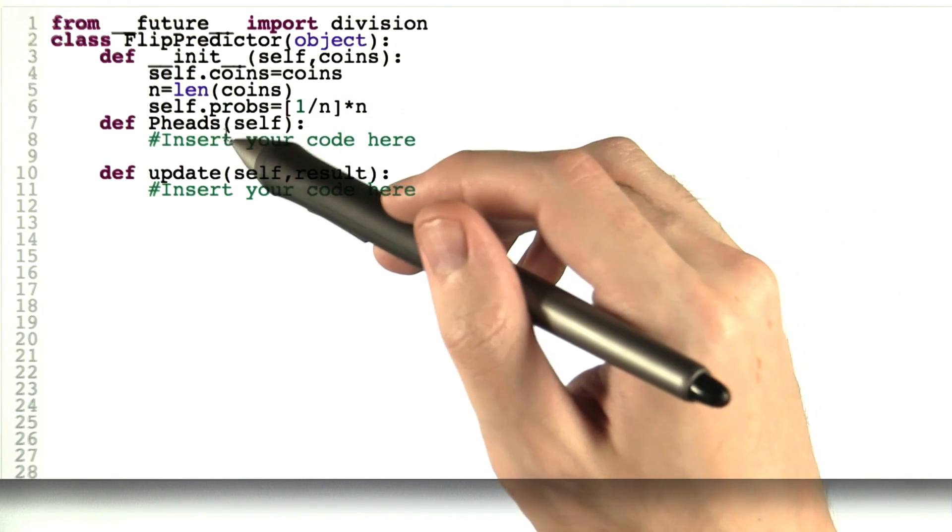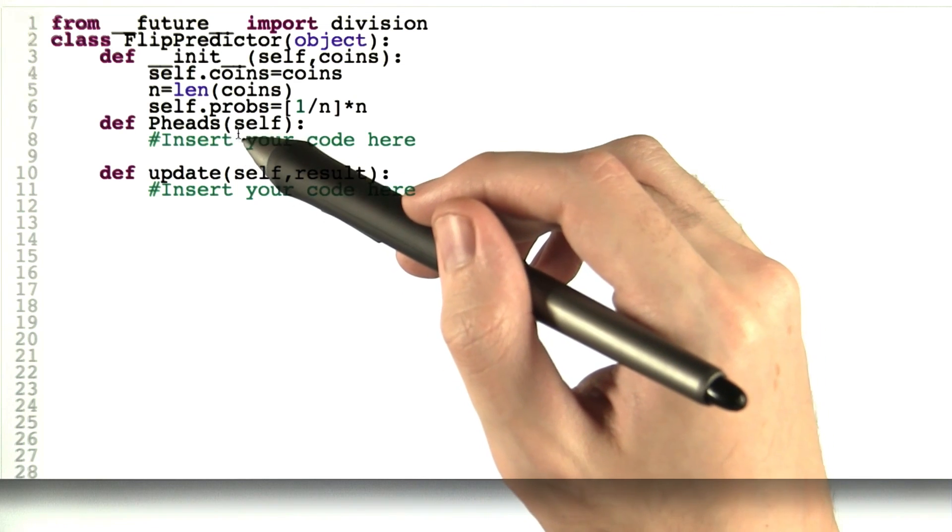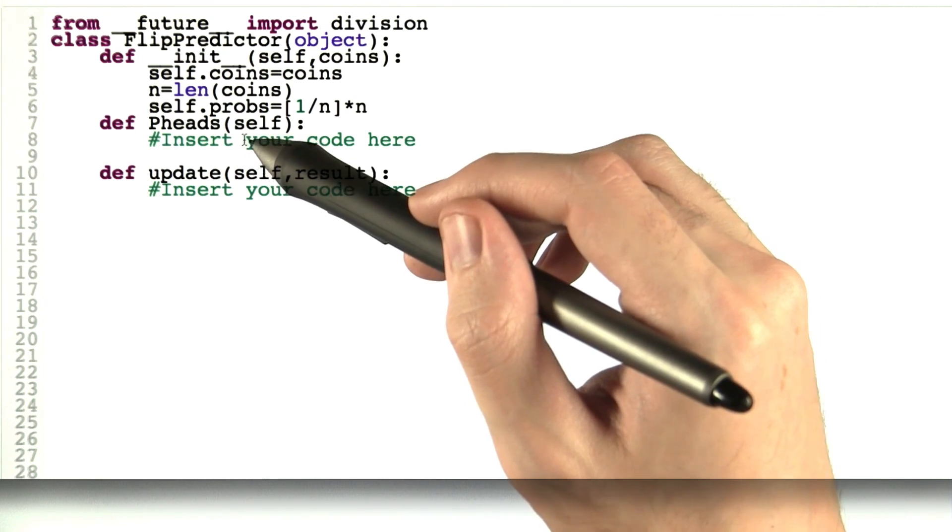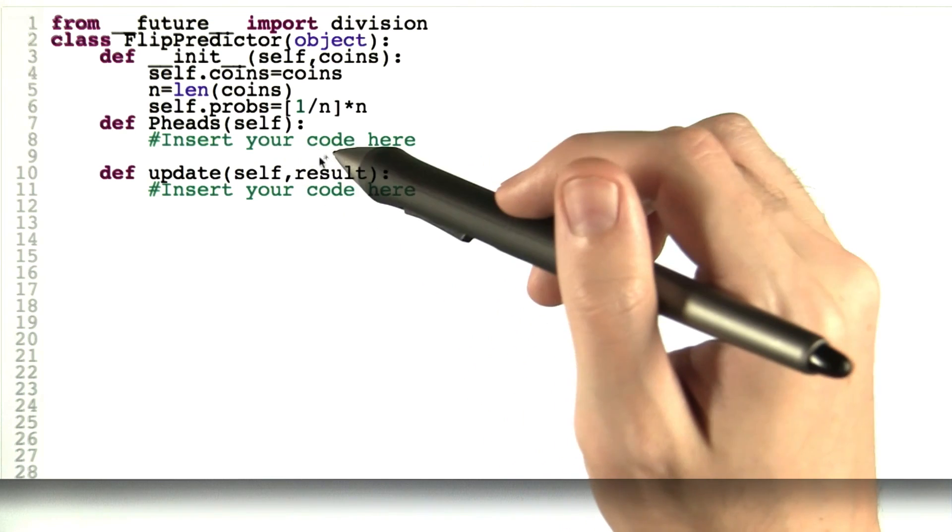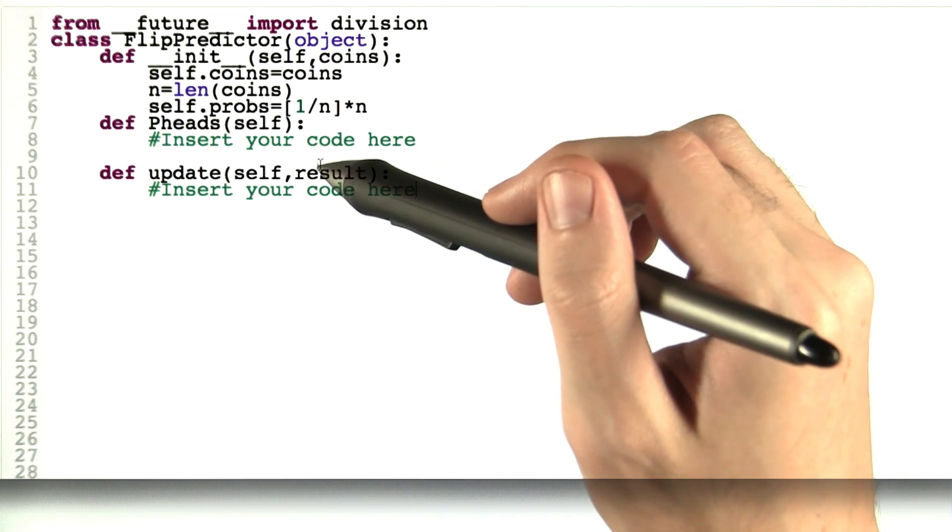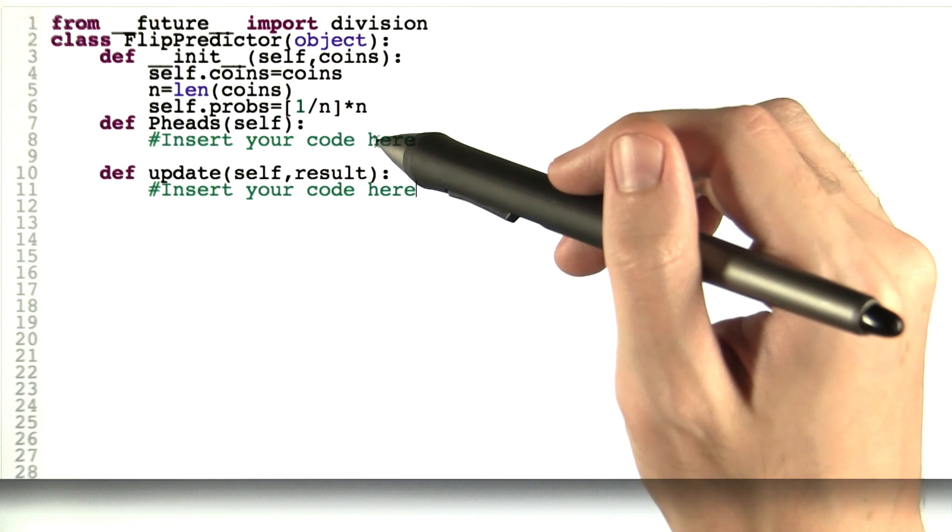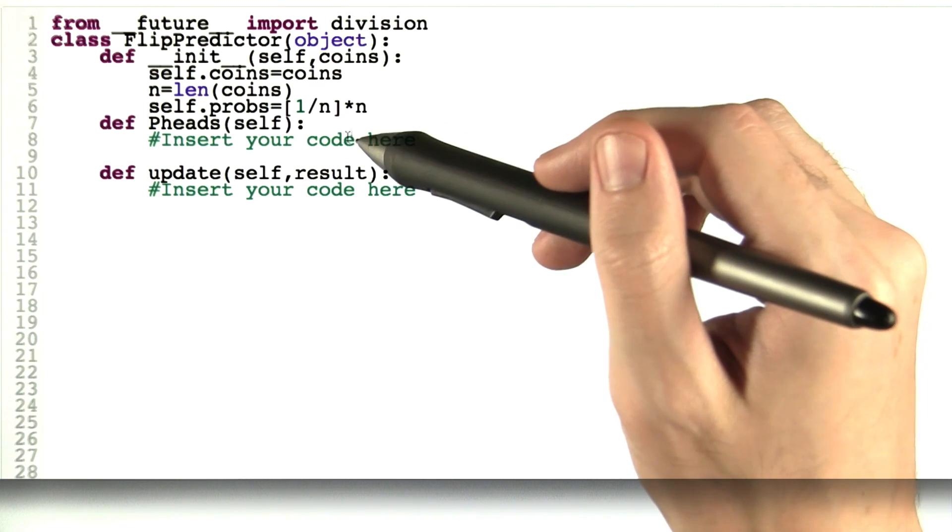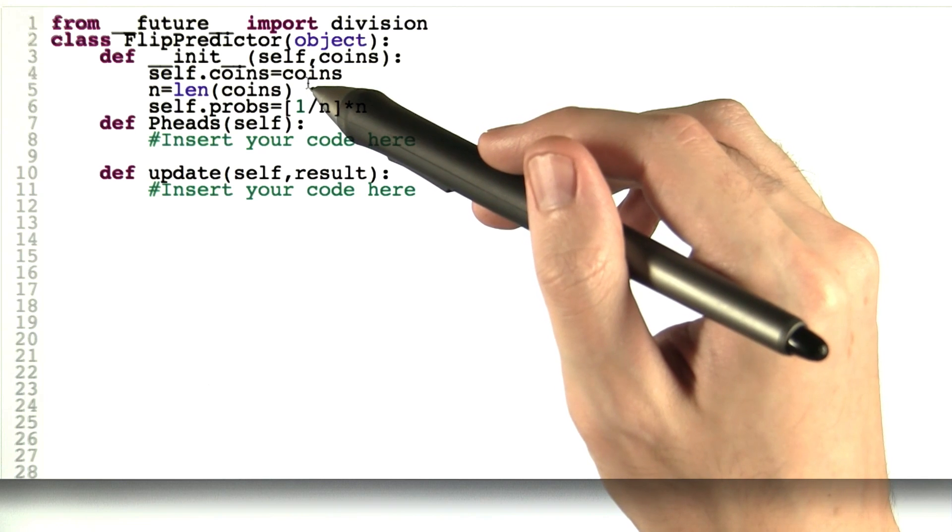So what I'd like you to do is fill in these two functions. pheads is a function that just returns the probability of heads right now. So given your best guess of the current probabilities, what's the probability of coming up with heads? And you can compute this using self.probs and self.coins.